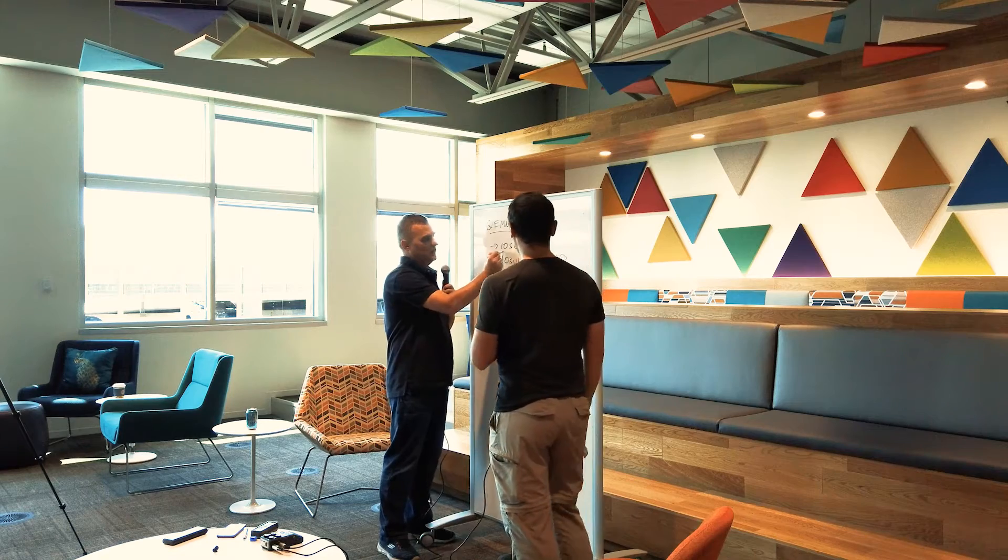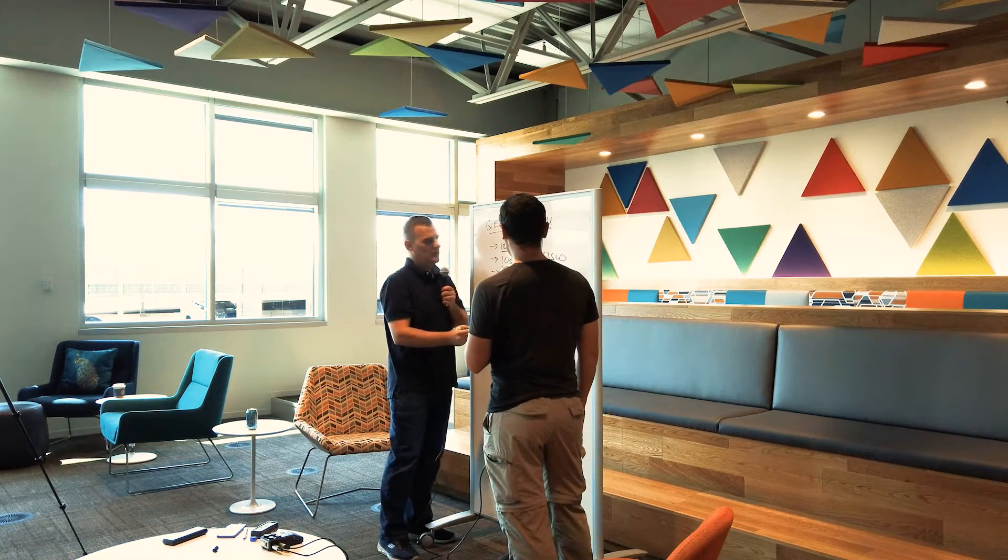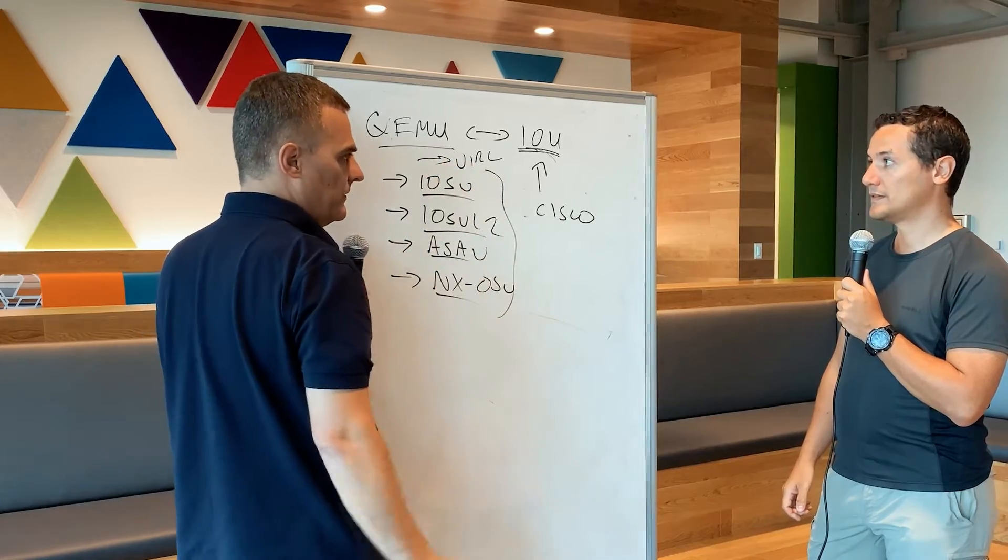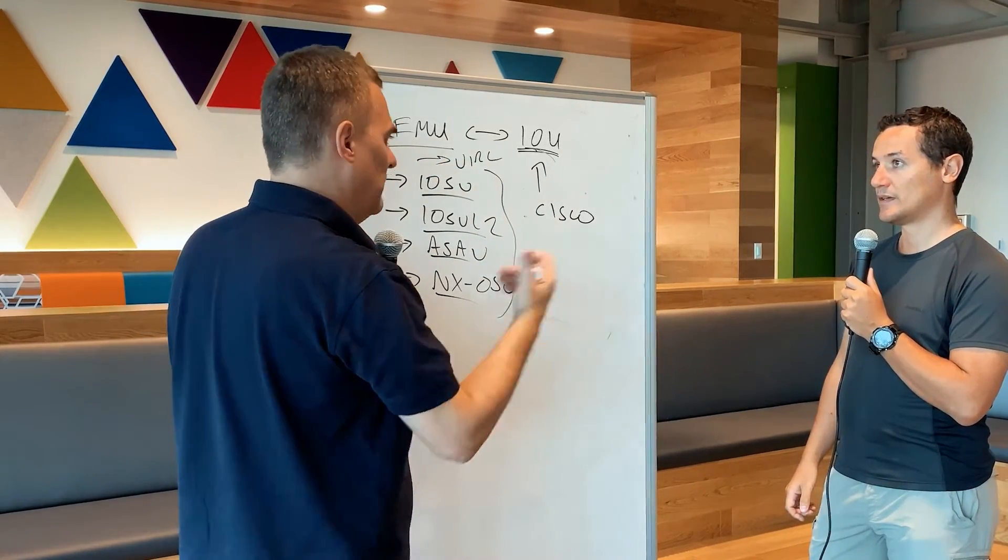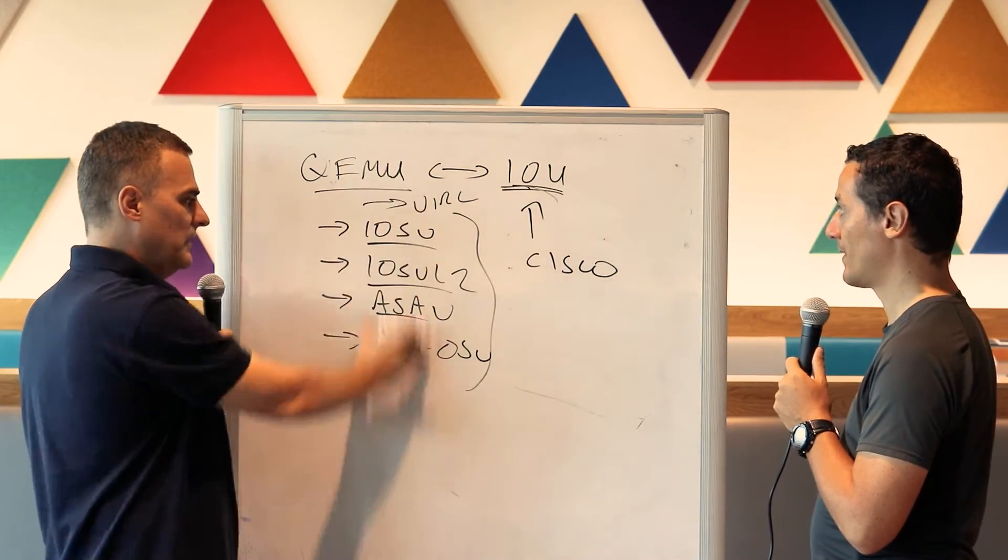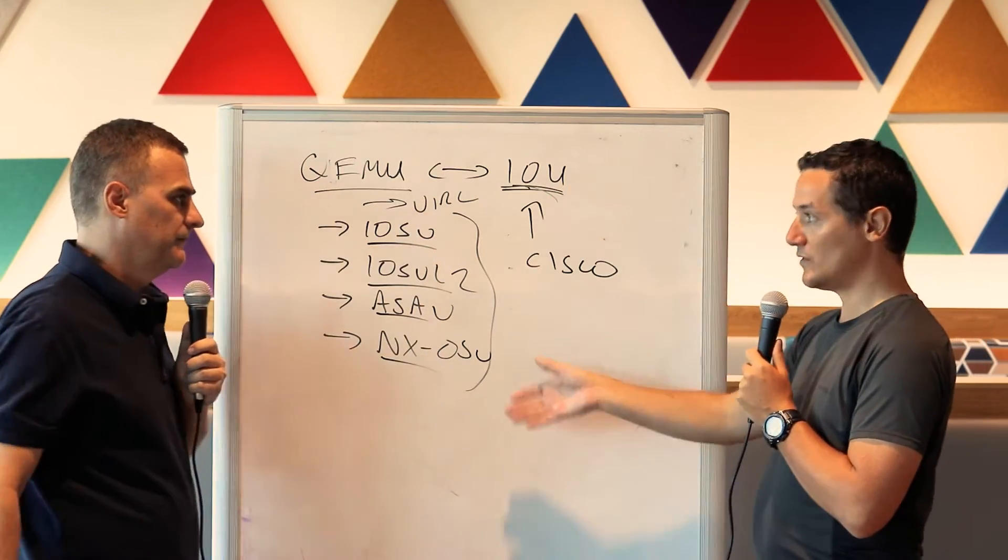The question I always get is how do I get these images. If they want these Cisco images they need to buy a Virl license and then they would download the images and then they'll be able to import them into GNS3. This is the recommended route, the legal way to do it.